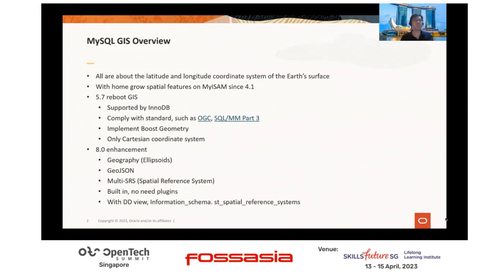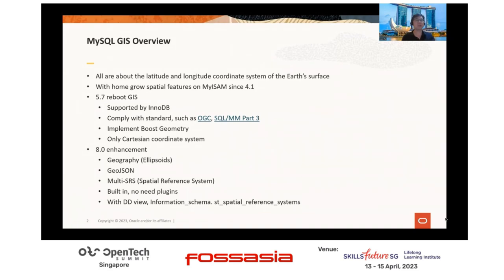In version 5.7, GIS is implemented by adopting Boost.Geometry, and we support a group of standards like OGC, SQL/MM, and R3. But with 5.7, we can only support traditional coordinate systems, which address only flat-edge service — not 100% matching with the sphere shape of the Earth.